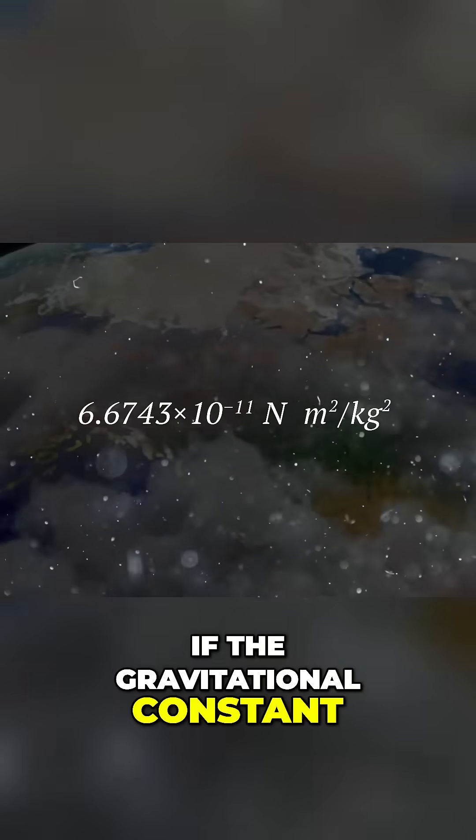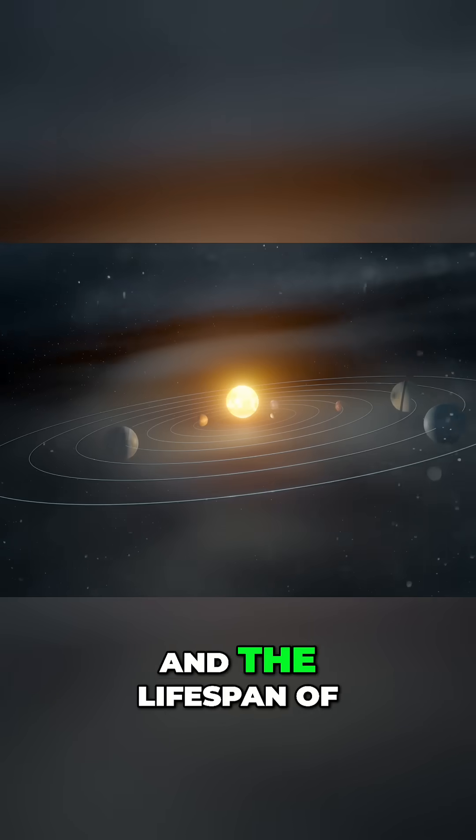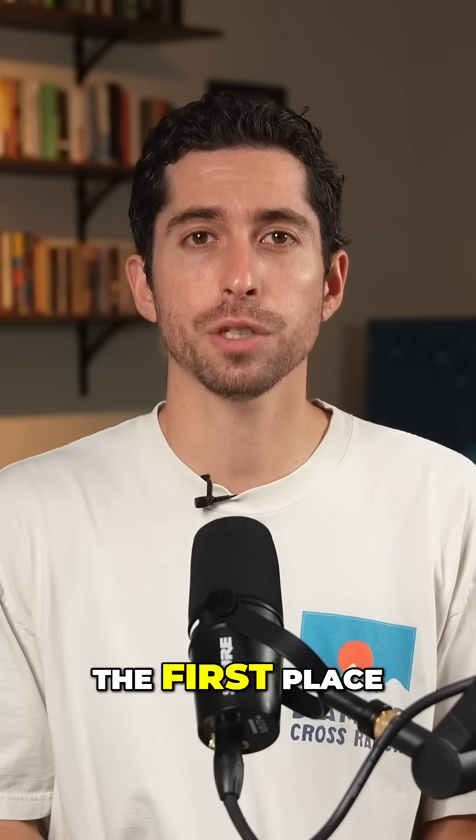If the gravitational constant were different, the Earth might not be able to retain its own atmosphere and the lifespan of the Sun could be drastically shorter than it is now. This wouldn't even allow for enough time for life to form in the first place.